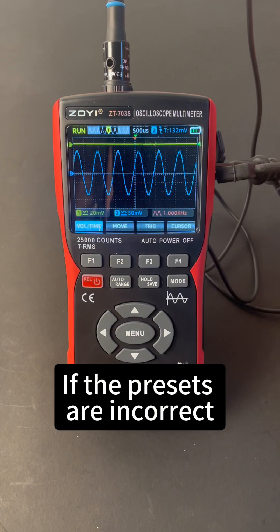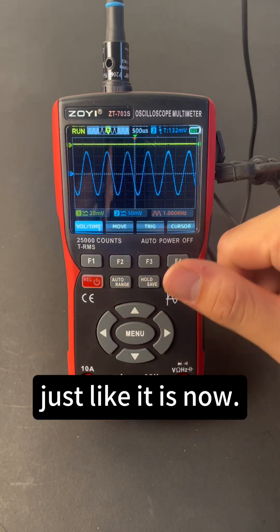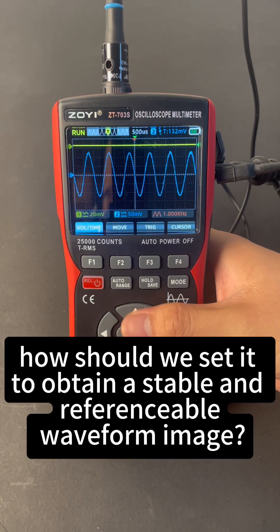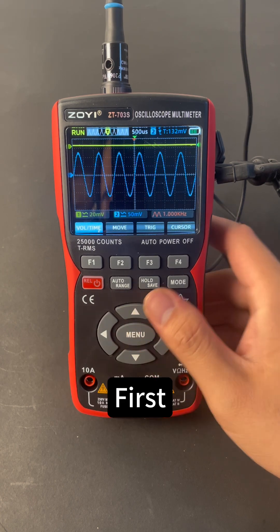If the presets are incorrect, the pattern on the screen will continuously move, just like it is now. So, how should we set it to obtain a stable and referenceable waveform image?